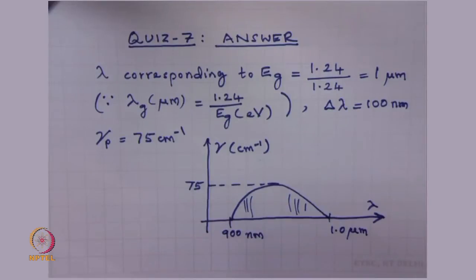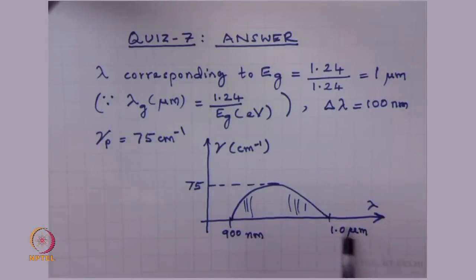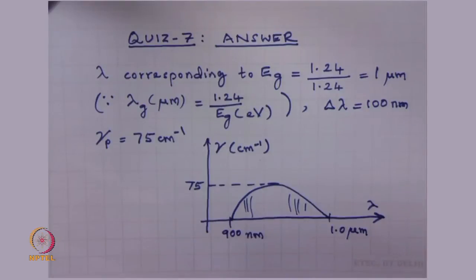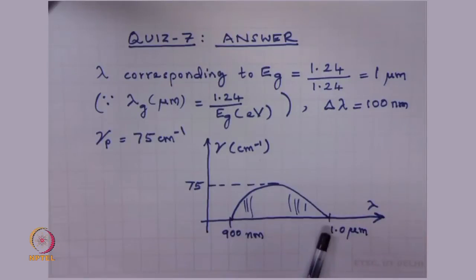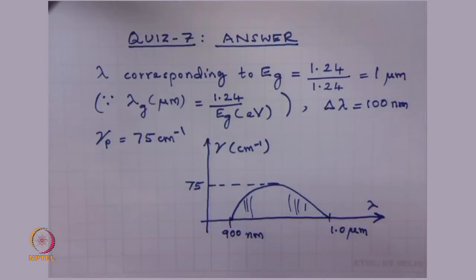So lambda is 1 micron, delta lambda is given as 100 nanometers, gamma-p is given. An important point is that if frequency is increasing in this direction, then wavelength will be decreasing. Energy increasing means wavelength is decreasing. That is all the points to use — you have a similar variation in frequency starting from Eg, but starting from the opposite end, because high energy is at that end. No need to remember or apply any formulae, because it is a quiz.